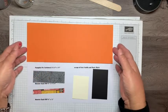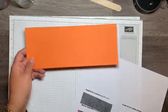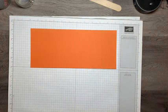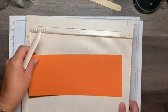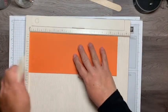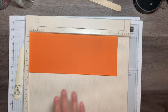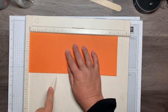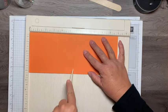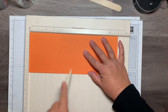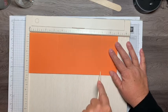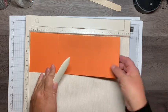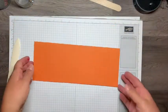Alright, so we're going to score this piece of Pumpkin Pie cardstock. Let me get my scoreboard out. I'll be scoring it at 1 inch, 3.5 inches, 5.5 inches, 9 inches, and 9.5 inches.